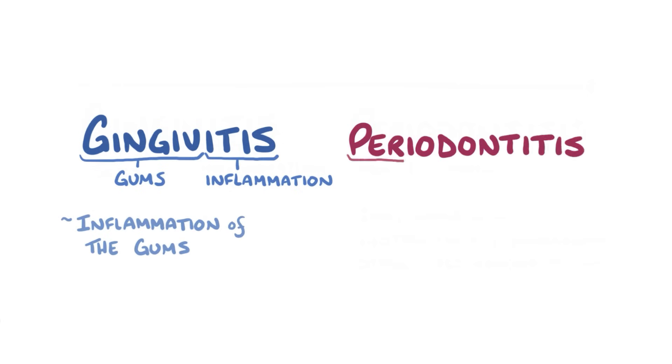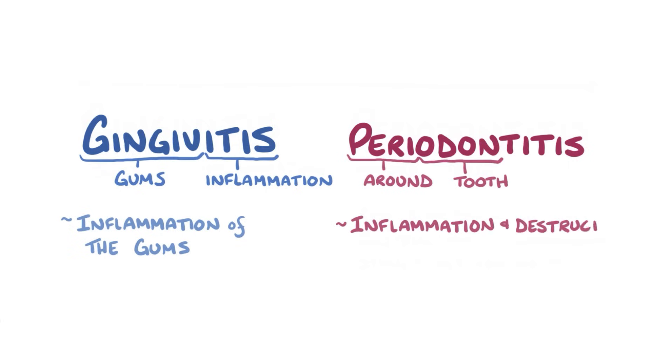With periodontitis, peri means around, and adon refers to the tooth, so it's inflammation and destruction of the supporting structures around the teeth.